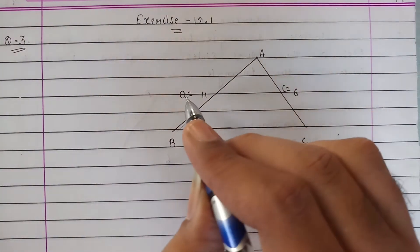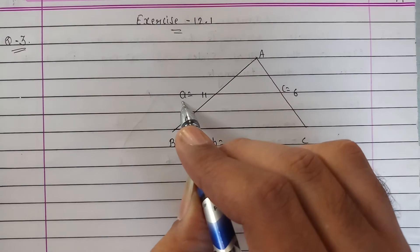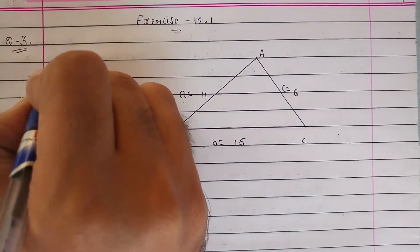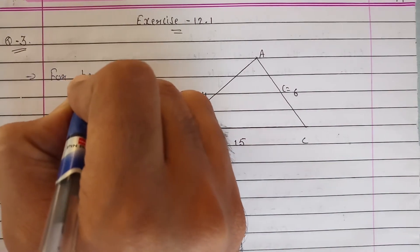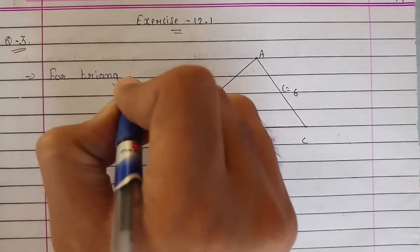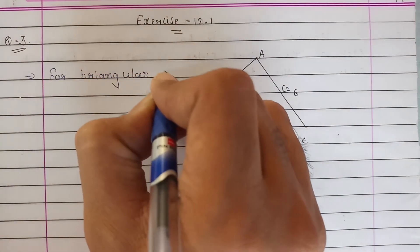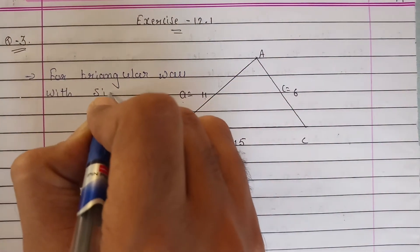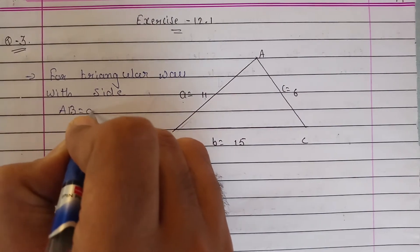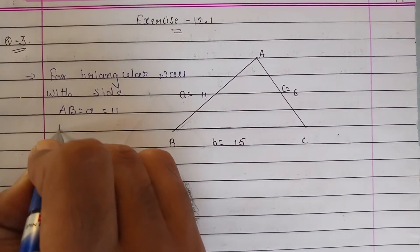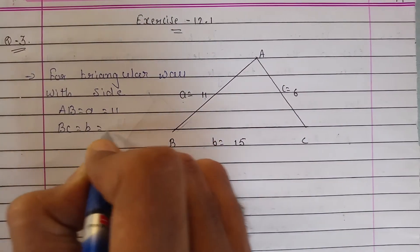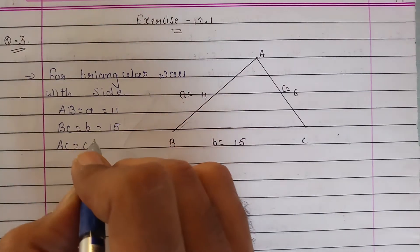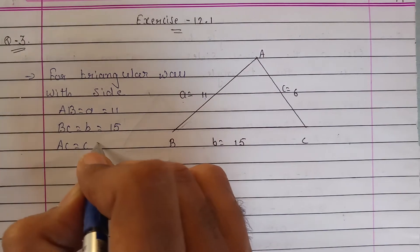So we suppose that this side's name is AB and its length we assume as a, which is given as 11. For triangular wall with sides AB = a = 11, BC = b = 15.